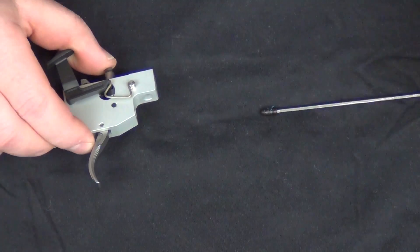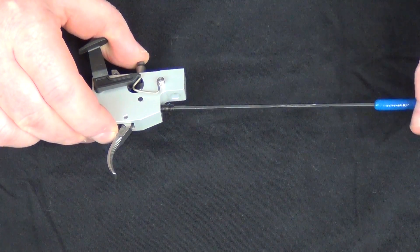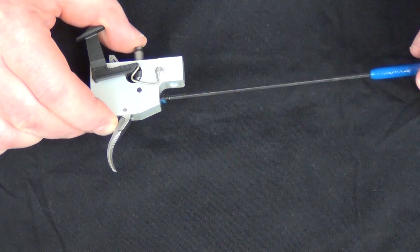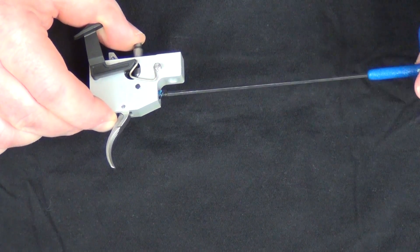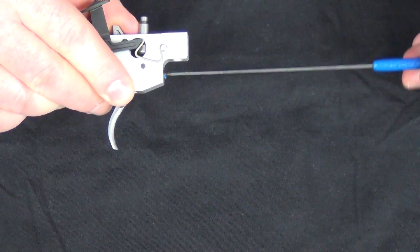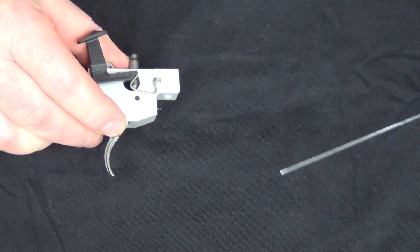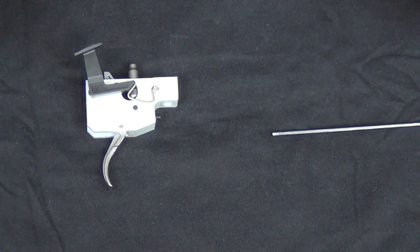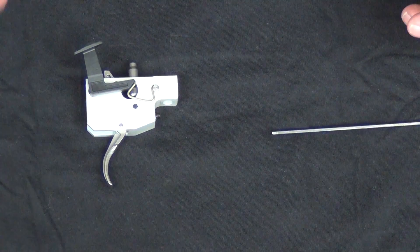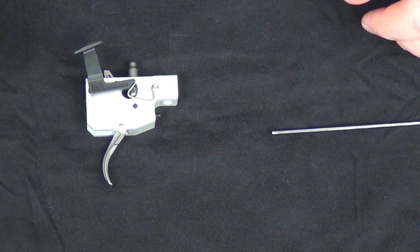And then we can just slip that right back in there. Put our set screw back in. And then when we put the rifle back together, we can adjust this trigger pull to your personal preference.